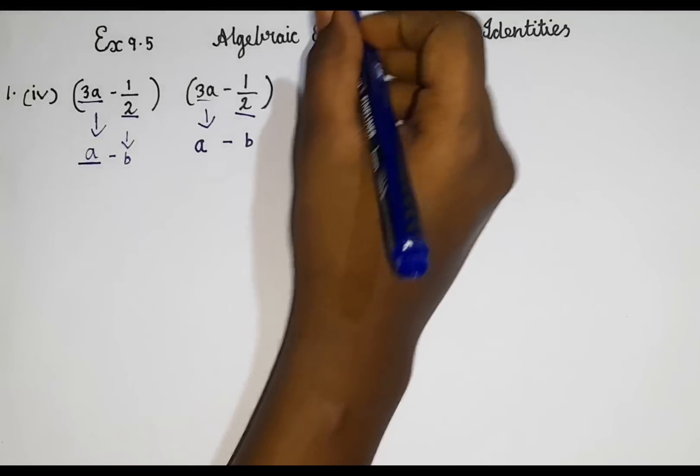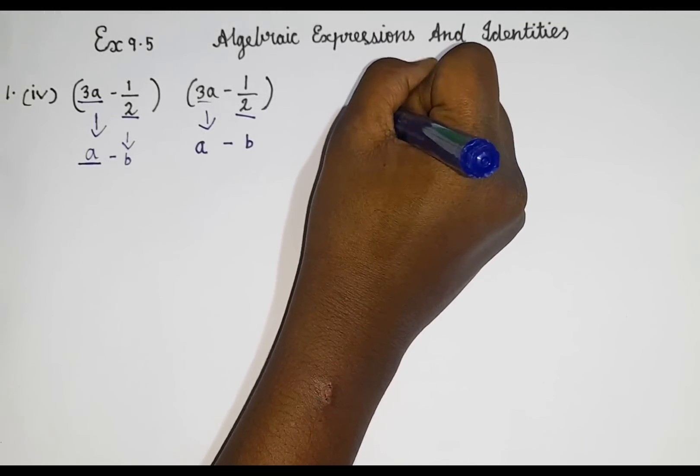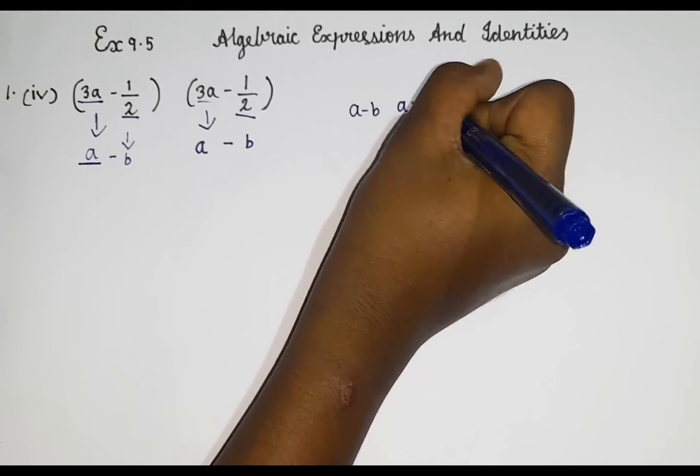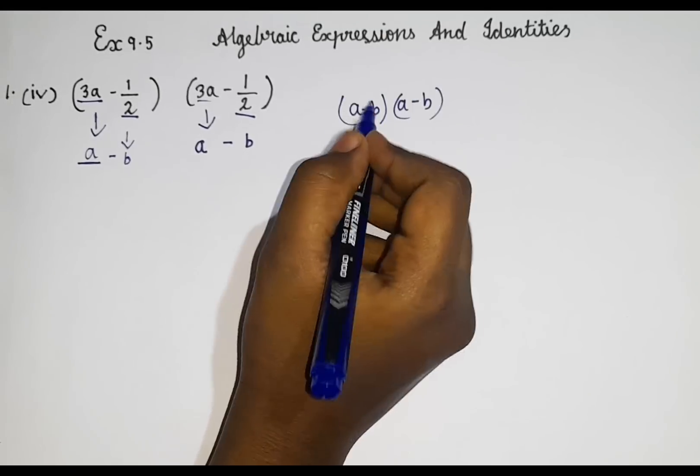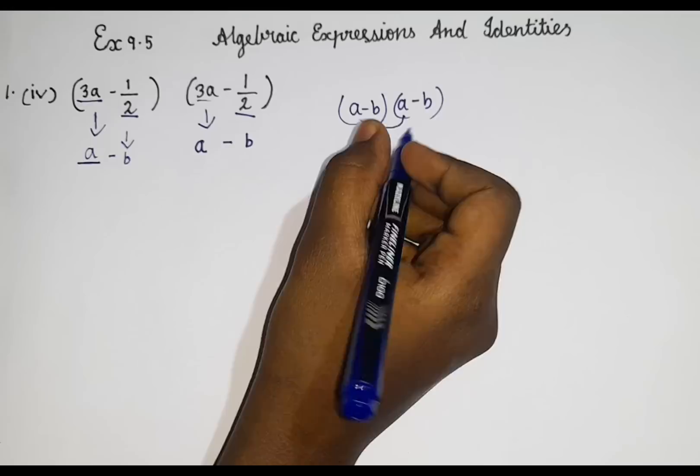When we have it like this, a minus b, a minus b, into a minus b into a minus b. So a 2 times it's repeating. So a square. Then b also it's repeating 2 times. So minus b square.